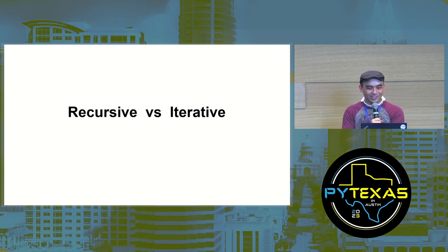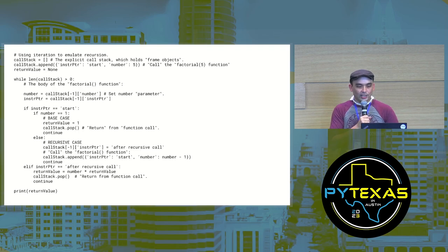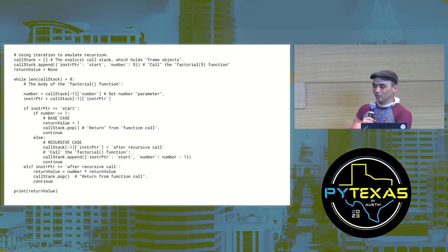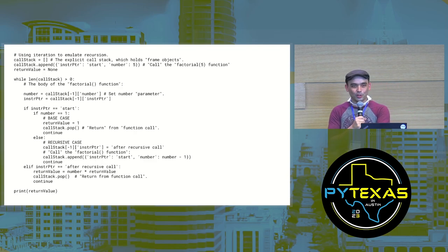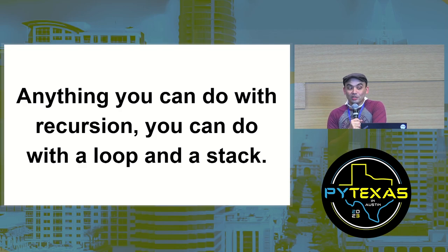A non-recursive algorithm is called an iterative algorithm. Some programmers claim there are things you can only do with recursion — that is completely wrong. Anything you can do with recursion you can do with a loop and a stack. I'll prove it: you can write an iterative factorial algorithm that emulates a recursive one. I emulate a call stack with a Python list, emulate frame objects with dictionaries containing local variables, and emulate function calls by pushing and popping those dictionaries. This is completely ridiculous but technically the code works.